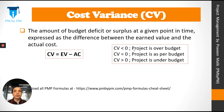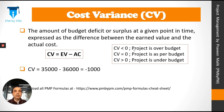Similarly, we have cost variance. It is the amount of budget deficit or surplus at a given point in time, expressed as the difference between the earned value and the actual cost. It can be expressed by the formula: CV = EV minus AC. Essentially we are trying to find the difference between the worth of work that we have completed and the cost at which it was actually completed. For our example project, CV comes out to be minus $1,000, meaning we have spent $1,000 more than what was expected. We have done work worth $35,000 but we have spent $36,000 to do this work. CV less than 0 means the project is over budget. CV equal to 0 means the project is as per budget, and CV greater than 0 means the project is under budget.